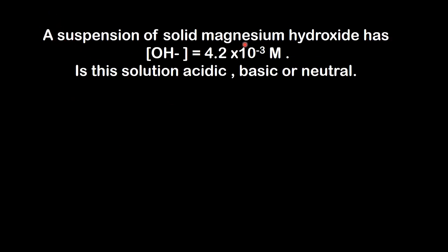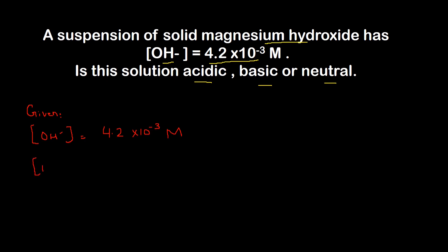A suspension of solid magnesium hydroxide has hydroxide ion concentration equal to 4.2×10⁻³ molar. Is this solution acidic, basic, or neutral? Yahaan par magnesium hydroxide mein maujood hydroxide ion ki concentration humein given hai jo ki equal hai 4.2×10⁻³ molar. Humse poocha gaya hai kya yeh solution acidic, basic ya phir neutral hai. Humne hydrogen ion ki concentration ko find out karna hai taakay hume malum ho ke kya yeh solution acidic, basic ya neutral hai.